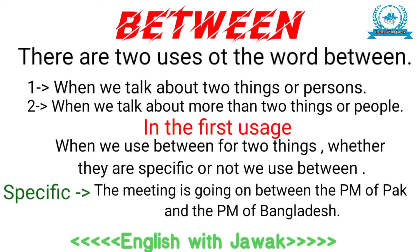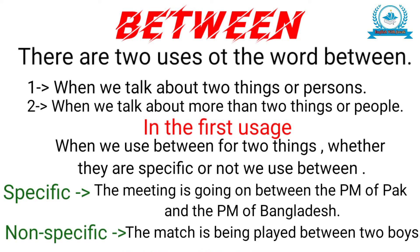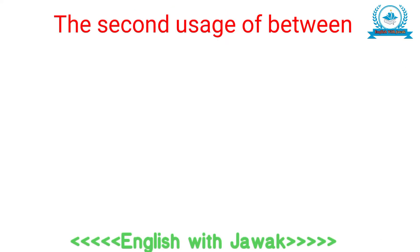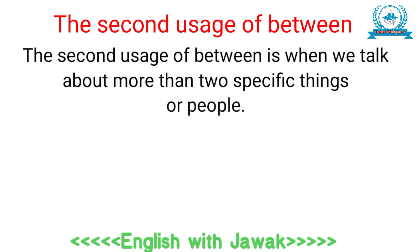یہاں پر آپ دیکھ رہے ہوں گے کہ meeting دو مخصوص ملکوں کے وزیرِ اعظم کے درمیان ہو رہی ہے — لوگ بھی مخصوص ہیں اور ملک بھی مخصوص ہیں۔ non-specific کی مثال ہے: 'The match is being played between two boys.' یہاں پر جو دو boys ہیں وہ specific نہیں ہیں، پھر بھی between کا use ہوا۔